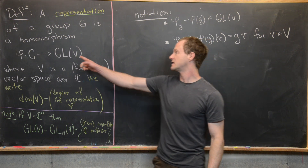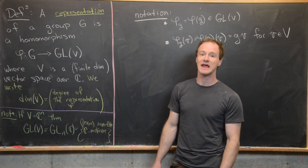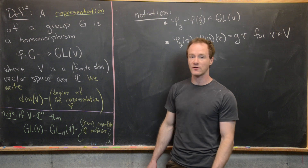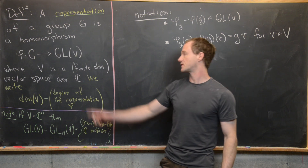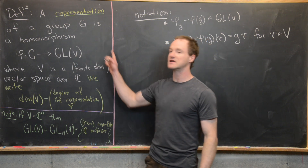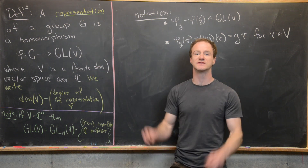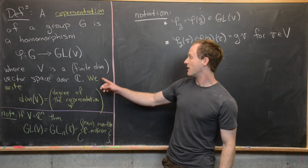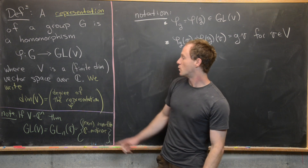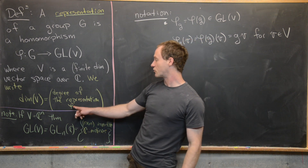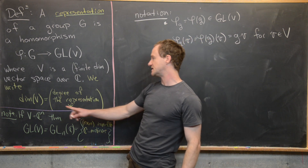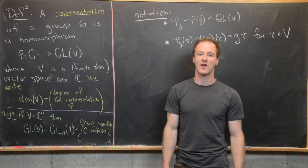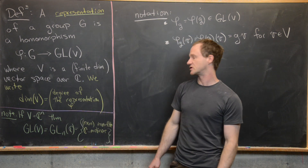GL(V) is the group of all invertible linear transformations from V to V — in other words, the general linear group of V. The degree of the representation is just the dimension of the underlying vector space.